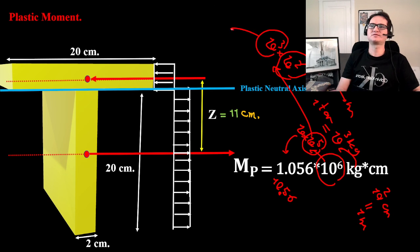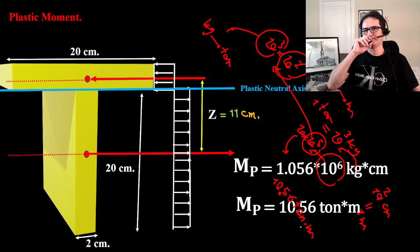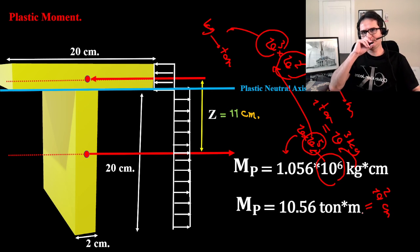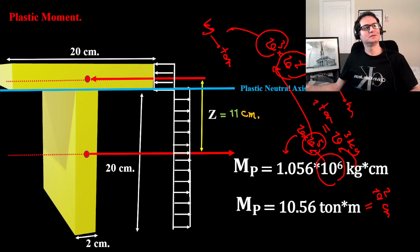This goes for conversion of centimeter to meter, and this is from kg to ton. So that's 10.56 ton·meter. And if you do the math, it gives you 10.56 ton·meter for plastic moment. Thank you.